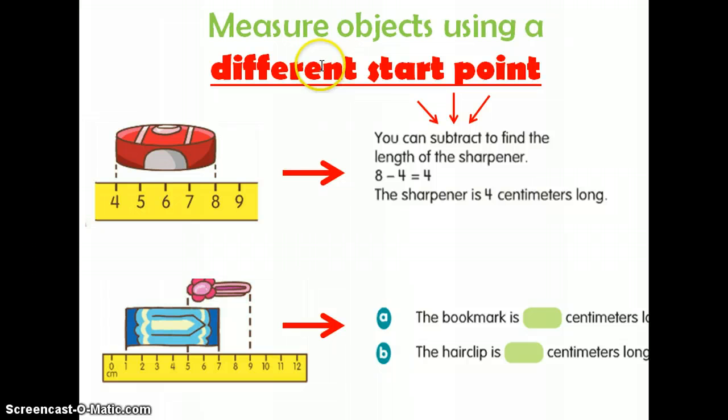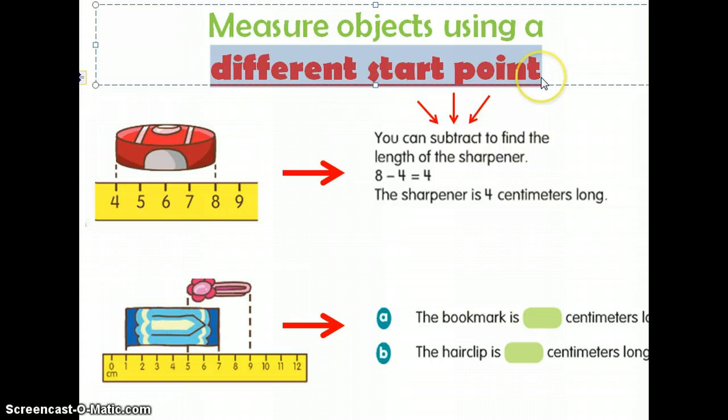The other thing that you're learning about today is how to measure objects using a different start point. What that means is that you're not actually starting at zero. I know in one of the other lessons we learned that when you're measuring using a ruler, you have to start at zero.